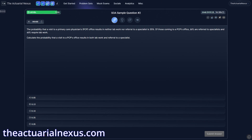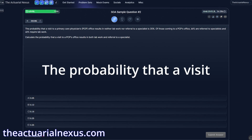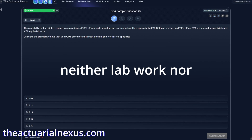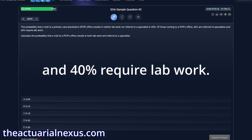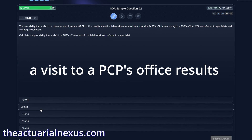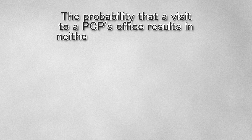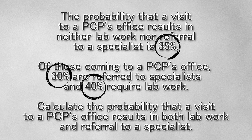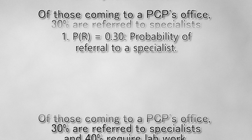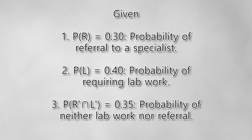Here's a relatively easy example using the principle of inclusion-exclusion. The question states that the probability that a visit to a PCP's office results in neither lab work nor referral to a specialist is 35%. Of those coming to a PCP's office, 30% are referred to specialists and 40% require lab work. Calculate the probability that a visit to a PCP's office results in both lab work and referral to a specialist. With these types of questions, the question is not going to directly state the probability of A or the probability of B. Often, you're going to have to define your own variables and figure out the correct equations to use.